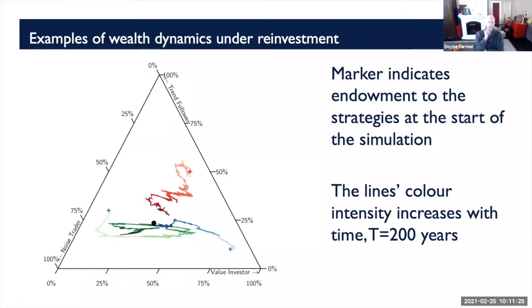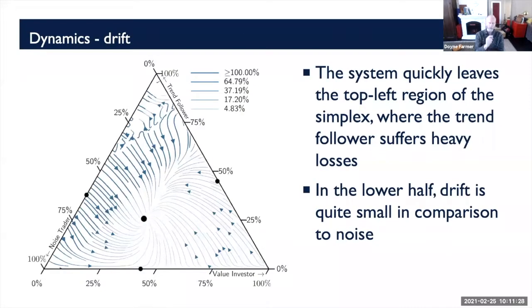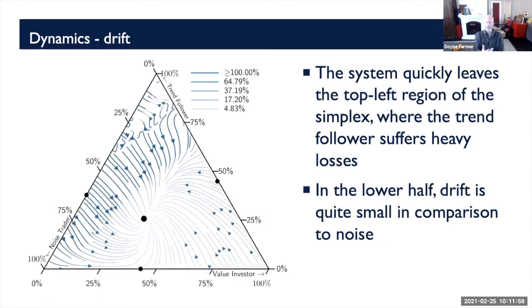The previous dynamical picture was made assuming determinism — we averaged over future events to get mean returns and assumed wealth dynamics followed those averages. But what's really going on is stochastic: every day we clear the market, the noise trader generates a random number, the dividend process has a random number, and returns to the three investors fluctuate substantially. There's a lot of noise in this system.